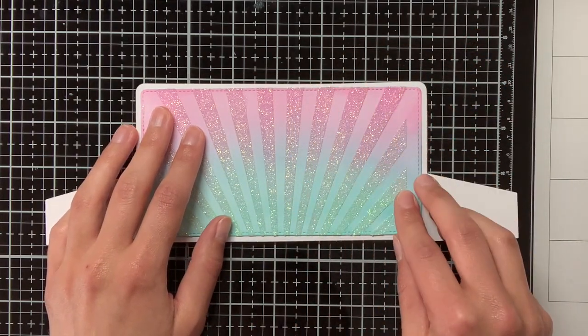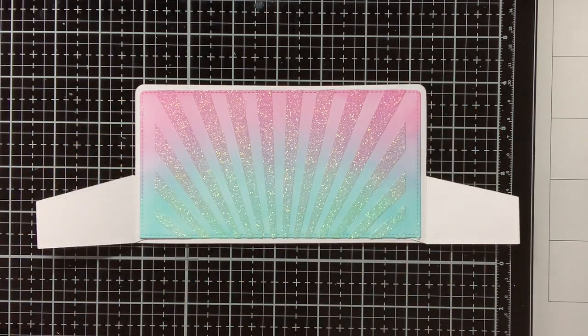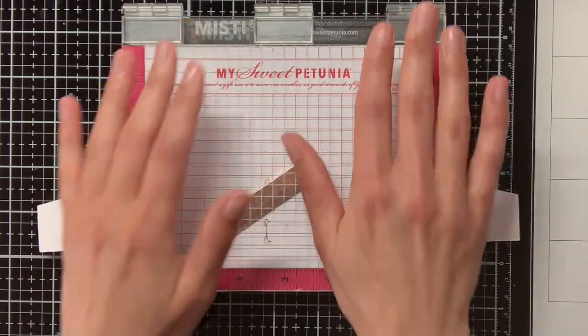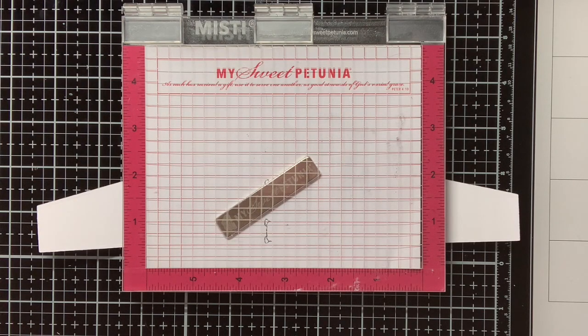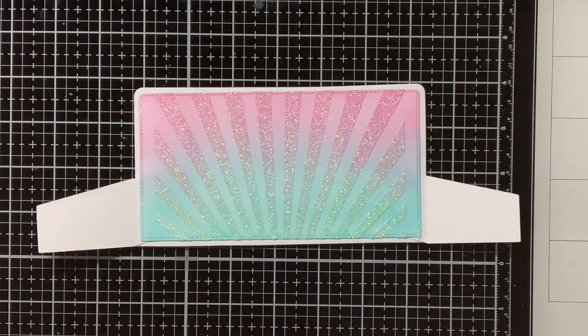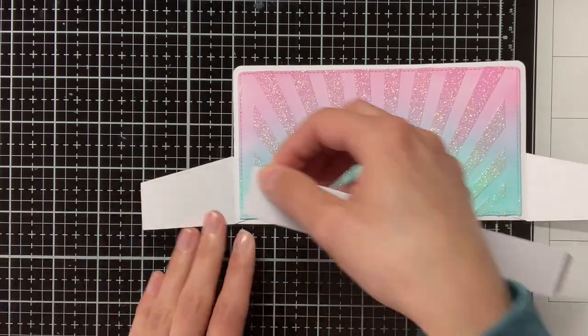Before I go further in assembling the box, I first want to adhere my background panel, because now I can still easily access it and also put something heavy on top to make sure that it dries flat. So now my background is adhered, I can move on to adhering the front of the box and also the inserts.